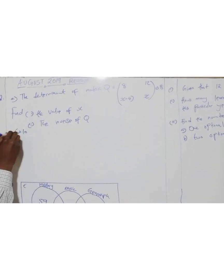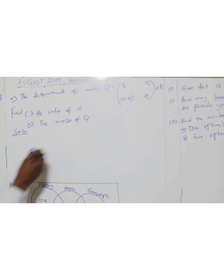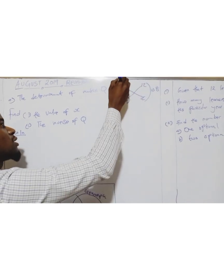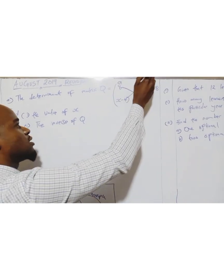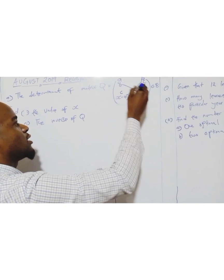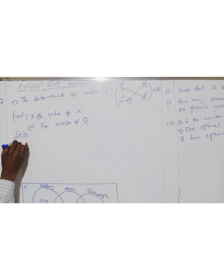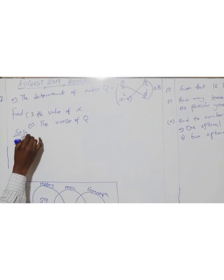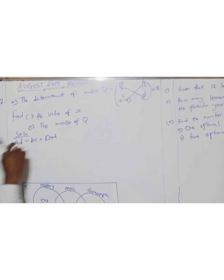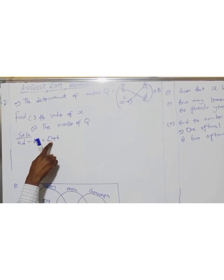Solution. When you're dealing with a determinant, you cross multiply. You should take this as your a, this as your b, this as your c, this as your d. So a times d — this is the formula. Never forget this formula. BC equals the determinant. So ad minus BC equals the determinant.